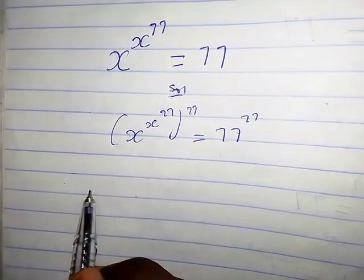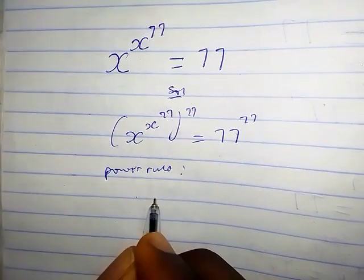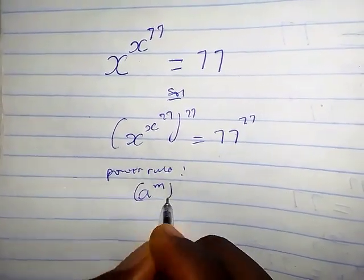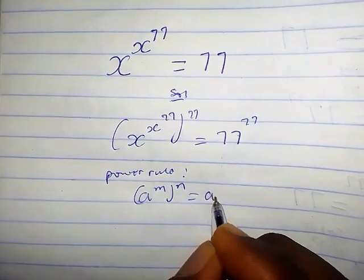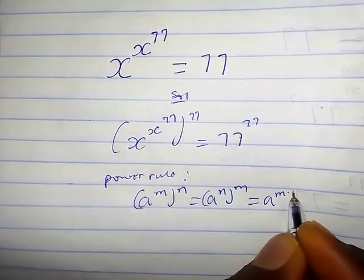So now we have to recall the power rule. The power rule says that a raised by m times n is the same thing as a raised by n times m, which is also the same thing as a raised by m times n.